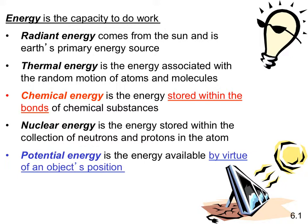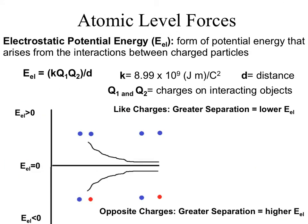Potential energy is energy available by virtue of an object's position. Electrostatic potential energy, or E sub EL, is a very important force we'll be looking at as the semester progresses. It's a form of potential energy that arises from the attraction between charged particles. The equation has a constant, the q's represent the charges on the interacting objects, and those are all divided by the distance between the two objects.